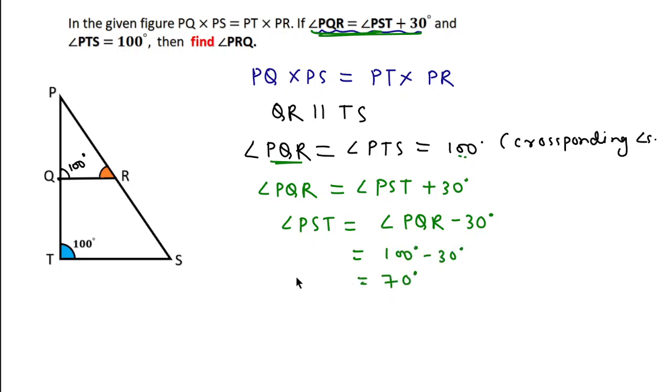Angle PST equals 70 degrees. Since QR and TS are parallel, PS will be the transversal line. So we can write angle PRQ equal to...